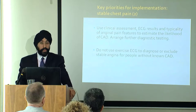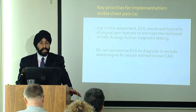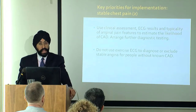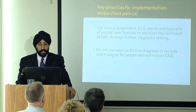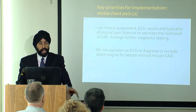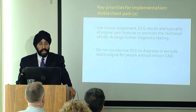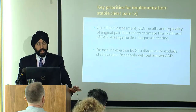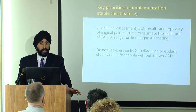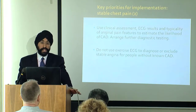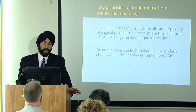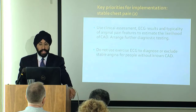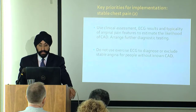We use our traditional clinical assessment — history, examination, ECG findings, and the typicality of the features of angina — to estimate the likelihood of coronary artery disease, and from then we decide what sort of test is required. No longer is exercise stress testing recommended, so we should not be using an exercise stress test to diagnose de novo new coronary disease in people with recent onset chest pain.